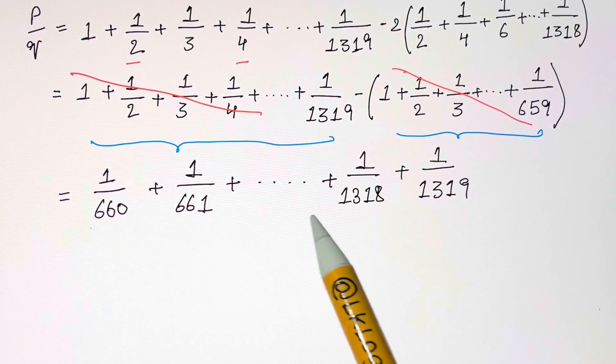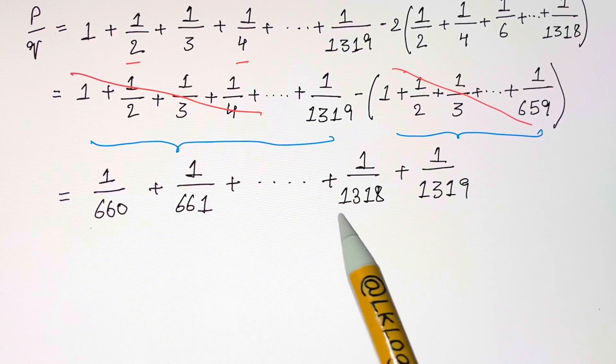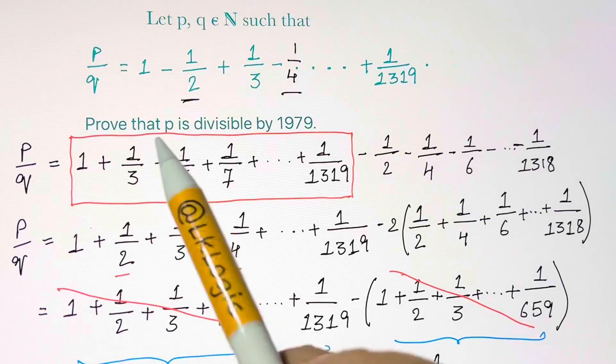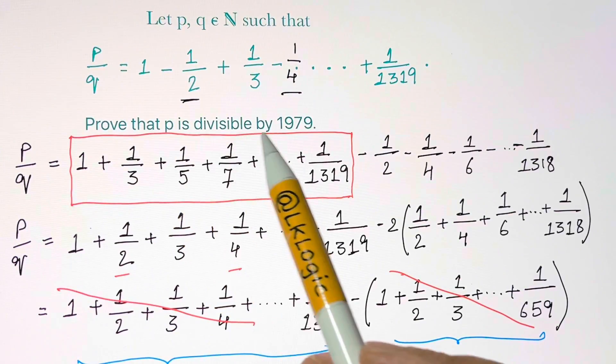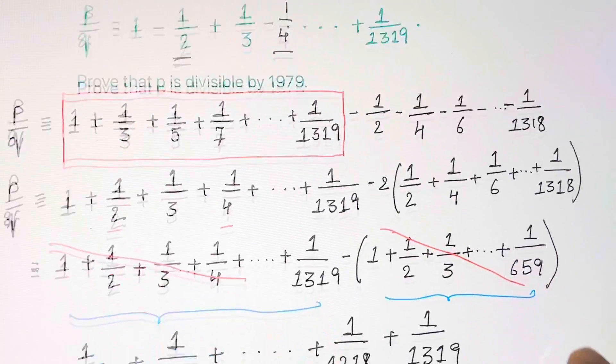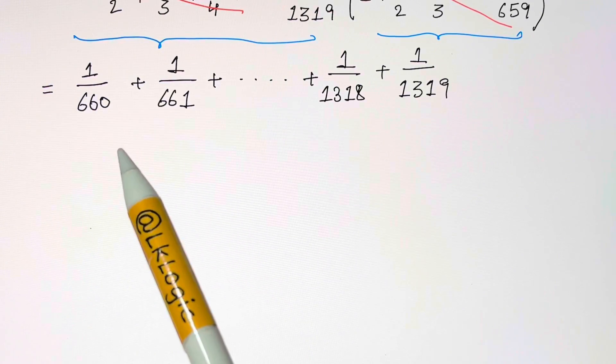This expression looks quite fine but we are still far away from what we have to achieve. We need to make sure the numerator is divisible by 1979, but we couldn't even see the number in our fraction series.